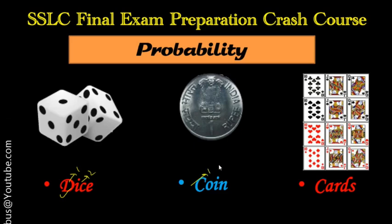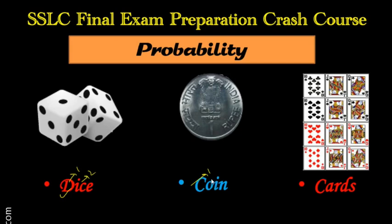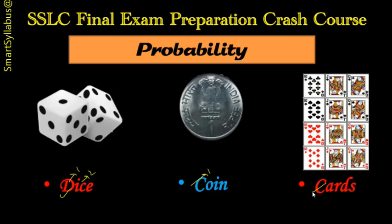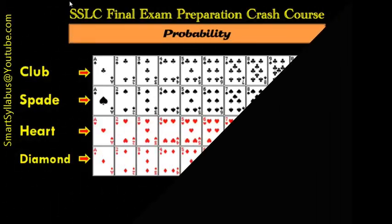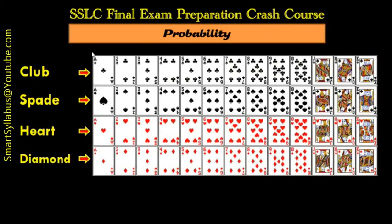In the third video we discussed about coin tossing — tossing a coin once, tossing a coin twice, two coins at a time — how to calculate the probability of the coin. Today in this video we are going to focus on cards. We will discuss in depth all the sums related to cards, so watch the video till the end.